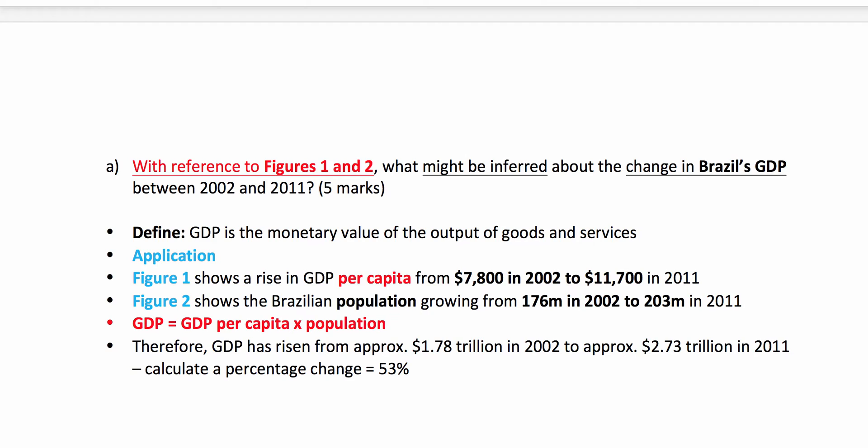GDP has risen from approximately $1.8 trillion in 2002 to approximately $2.7 trillion in 2011. And to nail the mark, just do a quick percentage change — about 50%, 53%. So we're using the data, we're defining our terms, and we get our marks.